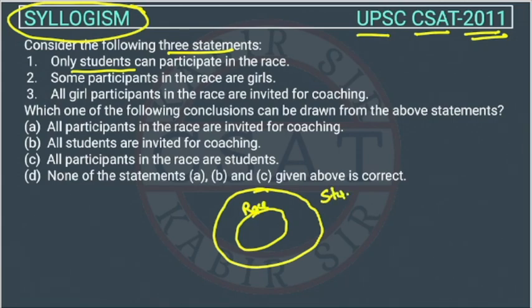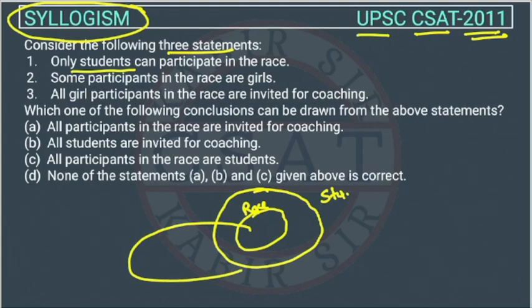Second statement: some participants in the race are girls. So the girls Venn diagram overlaps with the race circle, meaning some participants in the race are also girls — this overlapping area represents girls who are participating in the race.